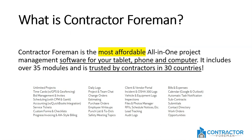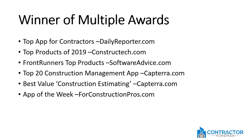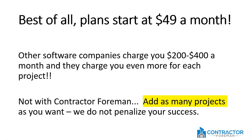So what is Contractor Foreman and how much does it cost? Contractor Foreman is the most affordable all-in-one project management software for your tablet, phone, and computer. It includes over 35 modules and is trusted by contractors in 30 countries. It's been ranked number one multiple times and best of all, plans start at only $49 a month. You can sign up for a free trial and start using it right now.